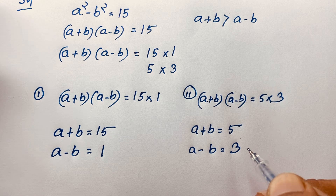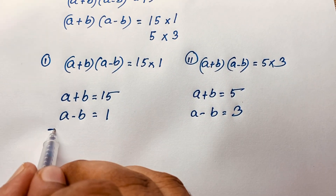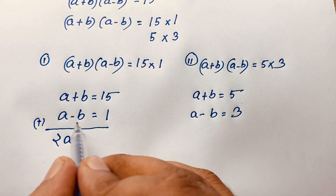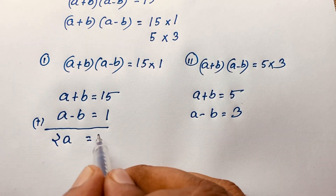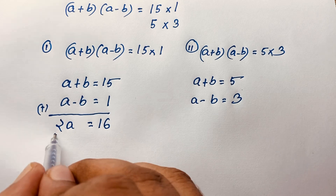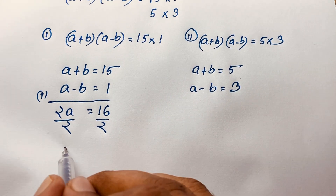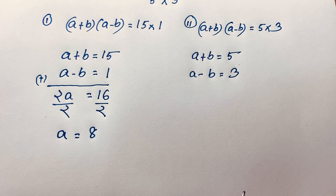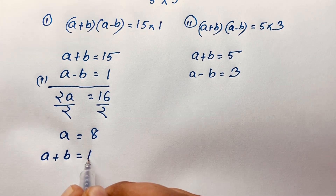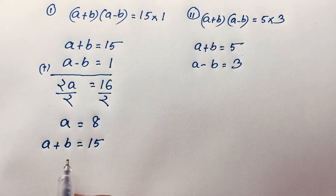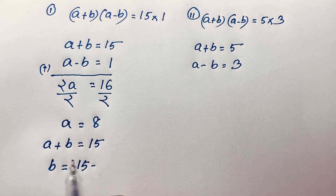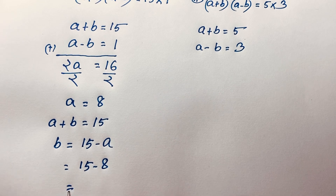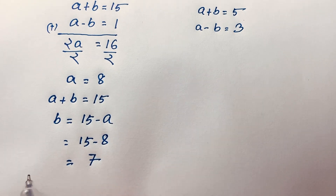For Case 1, adding both equations: a + a = 2a, the b terms cancel, and 15 + 1 = 16. Dividing both sides by 2, we get a = 8. Then from a + b = 15, b = 15 - 8 = 7. So for Case 1, (a, b) = (8, 7).